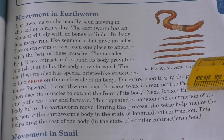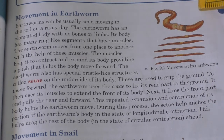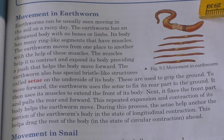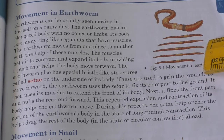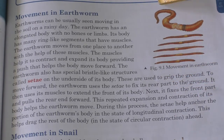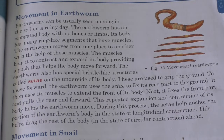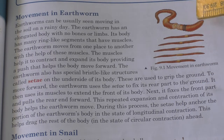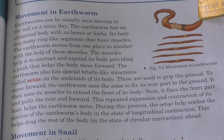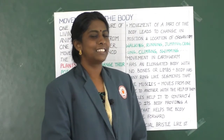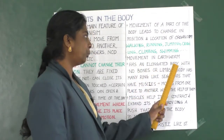Students, you can see figure 9.1, movement in earthworm. You can notice the whole body of the earthworm shown in different angles. The earthworm's body has mainly an elongated body but no bones or limbs. It has ring-like segments that have muscles. Now let us learn about movement in earthworm.